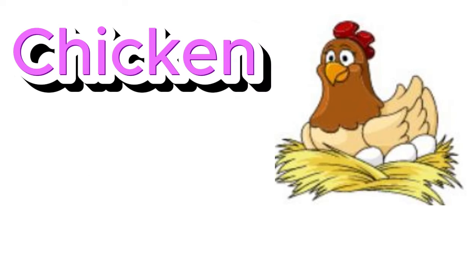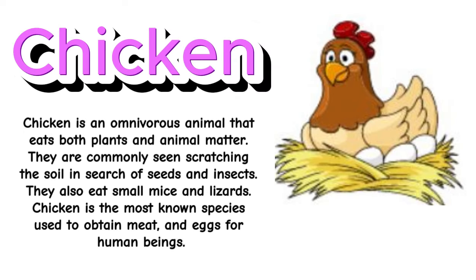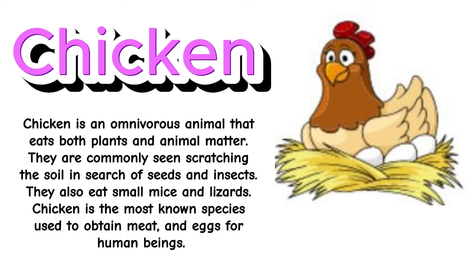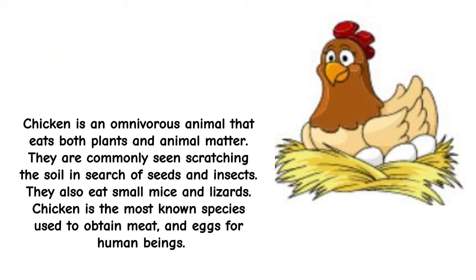Chicken. Chicken is an omnivorous animal that eats both plants and animal matter. They are commonly seen scratching the soil in search of seeds and insects. They also eat small mice and lizards. Chicken is the most known species used to obtain meat and eggs for human beings.